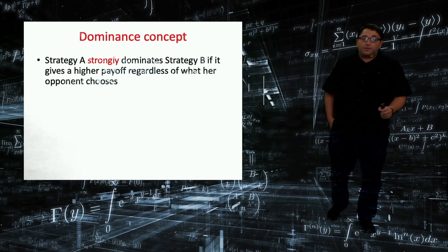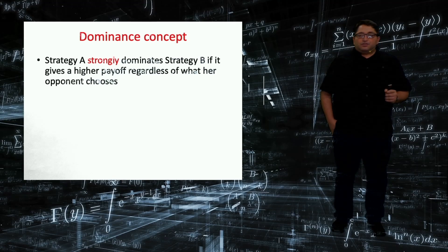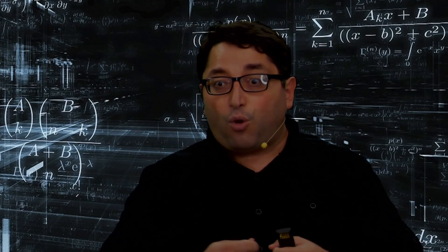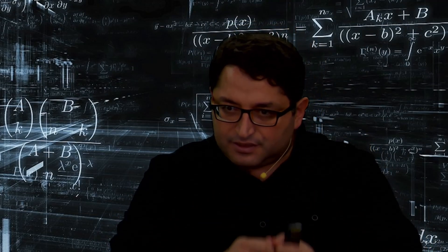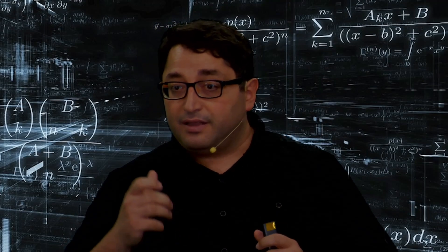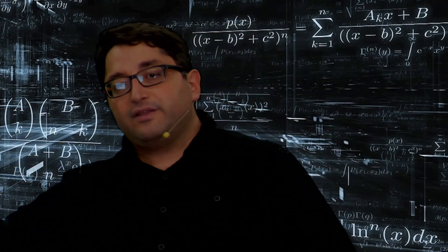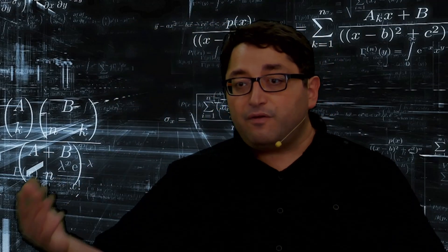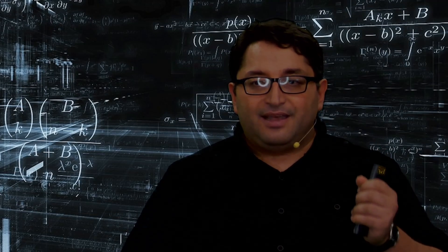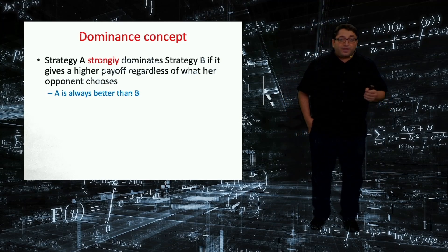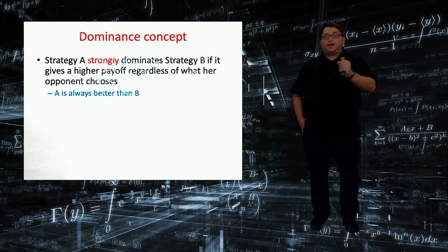So what is dominant strategy equilibrium? In order to define the equilibrium, I have to talk about the concept of dominance first. So I am comparing two strategies. A strategy A strictly dominates strategy B. In English, you can read it as always better. Strategy A strictly dominates, is always better than B, when it brings a higher payoff, regardless of what the other player does. So whatever my opponent does, A is giving me a higher payoff than B. So I can say that in simple English, A is always better than B. Then we have strict dominance. Strategy A strictly dominates strategy B.